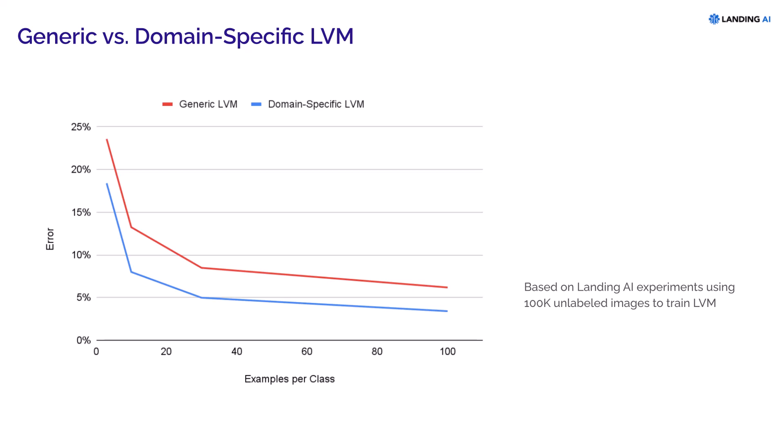On the tests we've run, the domain-specific LVM shows a 36% to 52% reduction in model errors compared to existing methods using generic LVMs. But even more important, once you've built a domain-specific LVM, you can save a lot of time when building a computer vision system for your domain. The domain-specific LVMs act as a prebuilt template and eliminate the need to construct a new model from scratch, which demands substantial effort.